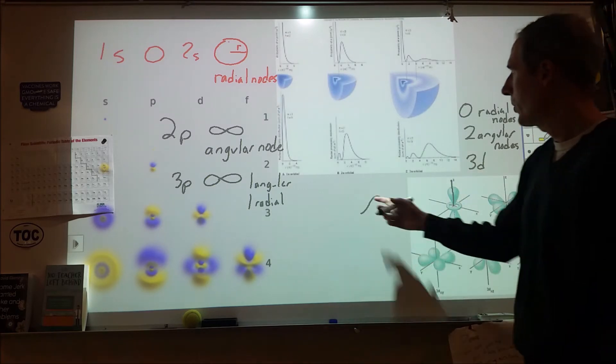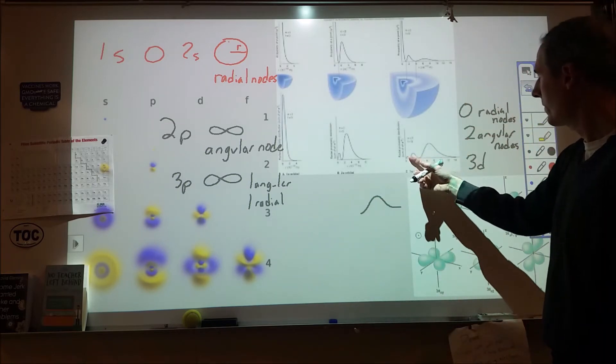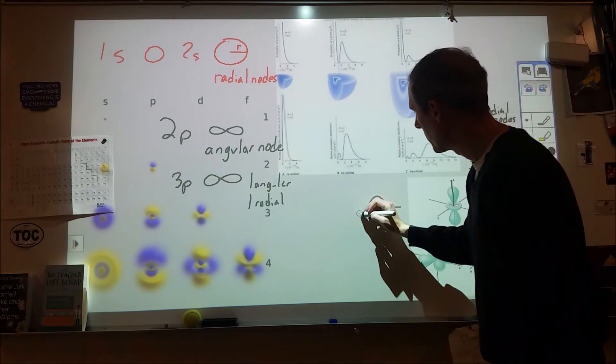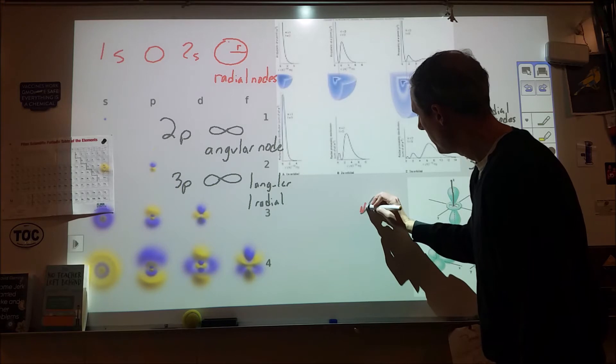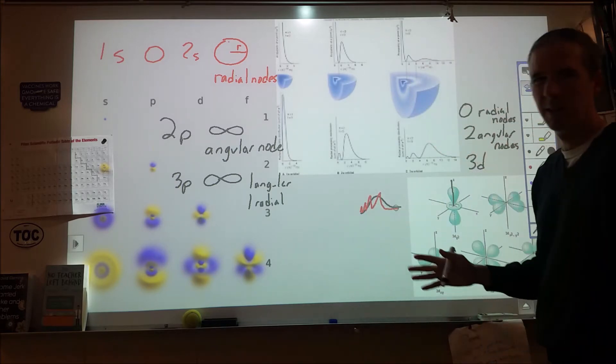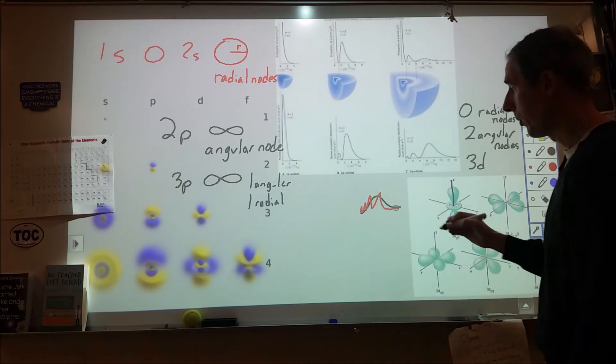So if we contrast that with a 4s orbital, what we're going to find is that in the 4s orbital, we're going to have these radial nodes as we move out. We're going to have three of them. So we're going to kind of have like a peak, peak, bigger peak, and bigger peak, like something like that.